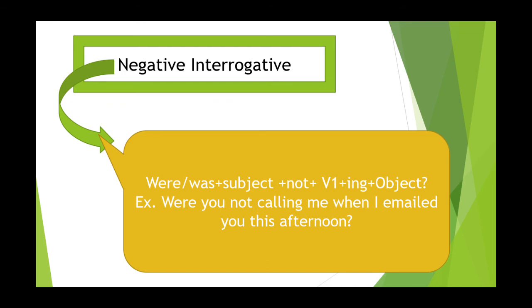We use 'were' according to the subject, because second person singular 'you' takes 'were' in past continuous tense, followed by the first form verb + ing + object.